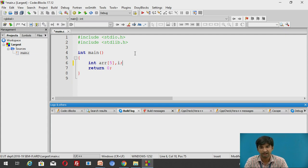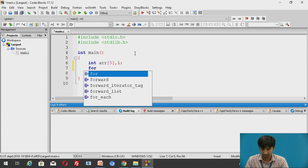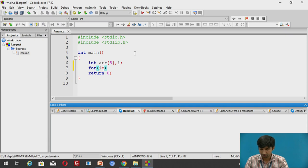Then comma i to indicate the loop counter. i will be having value 0, 1, 2, 3, 4. For i equal to 0, i is less than 5. In the array it has been discussed that the starting value will be from 0. So the last element or the last index will be array size minus 1.